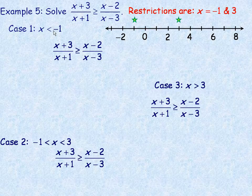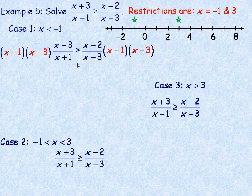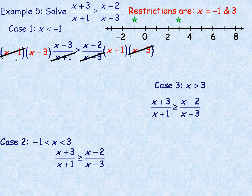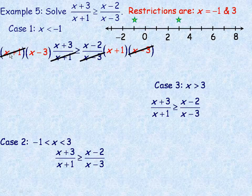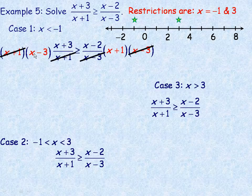So the first case: x is less than negative 1. Then between negative 1 and 3, and then to the right of 3. Similar to the other examples, I would multiply both sides by the product of the two denominators, so that the (x+1)s divide out on the left and the (x-3)s divide out on the right. Now, consider the sign when multiplying by (x+1)(x-3): if we're below negative 1, then (x+1) is negative. And (x-3) is also negative — for example, negative 5 minus 3 is negative 8. The product of two negatives is positive.